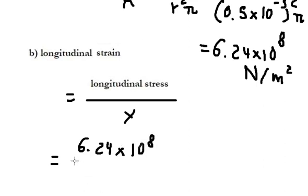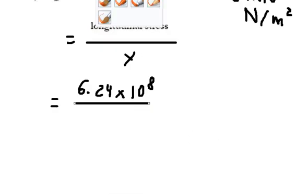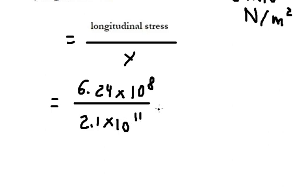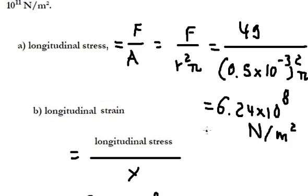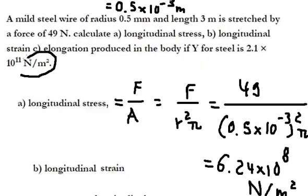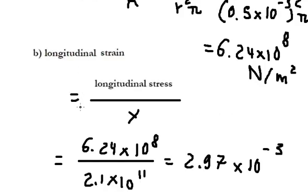So we have the numbers go in here, and then we divide by Y, which is this one. So we have 2.97 × 10⁻³. Because this unit divides by this unit, this one doesn't have a unit.